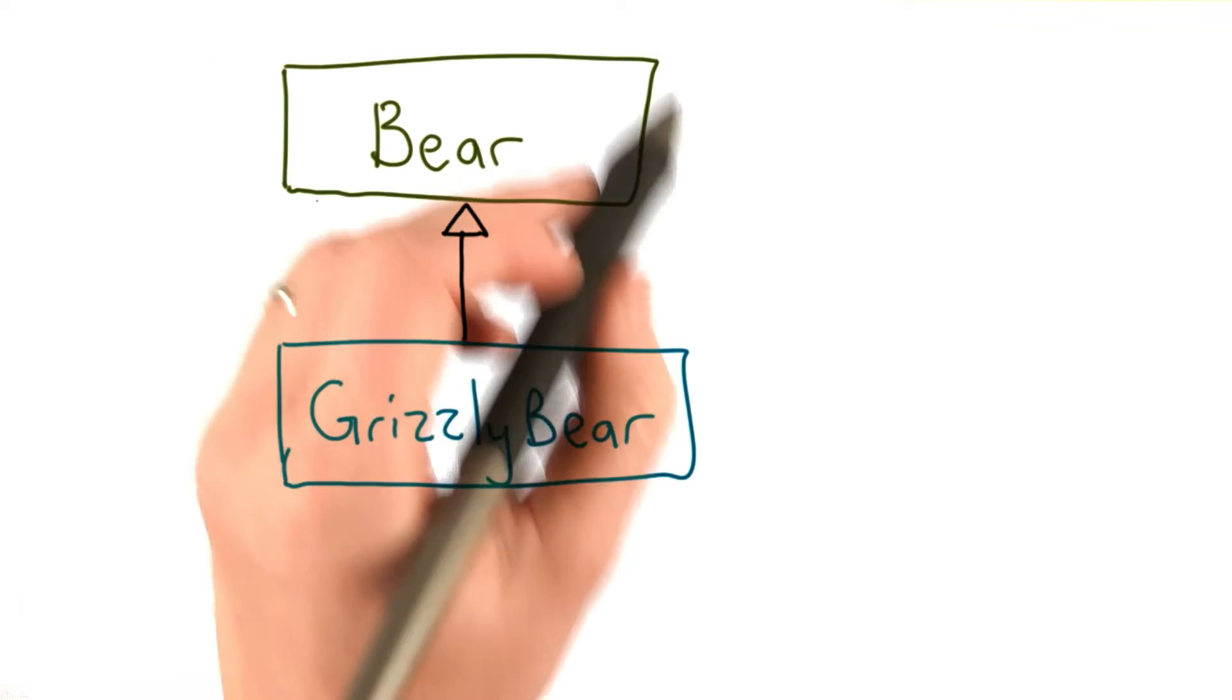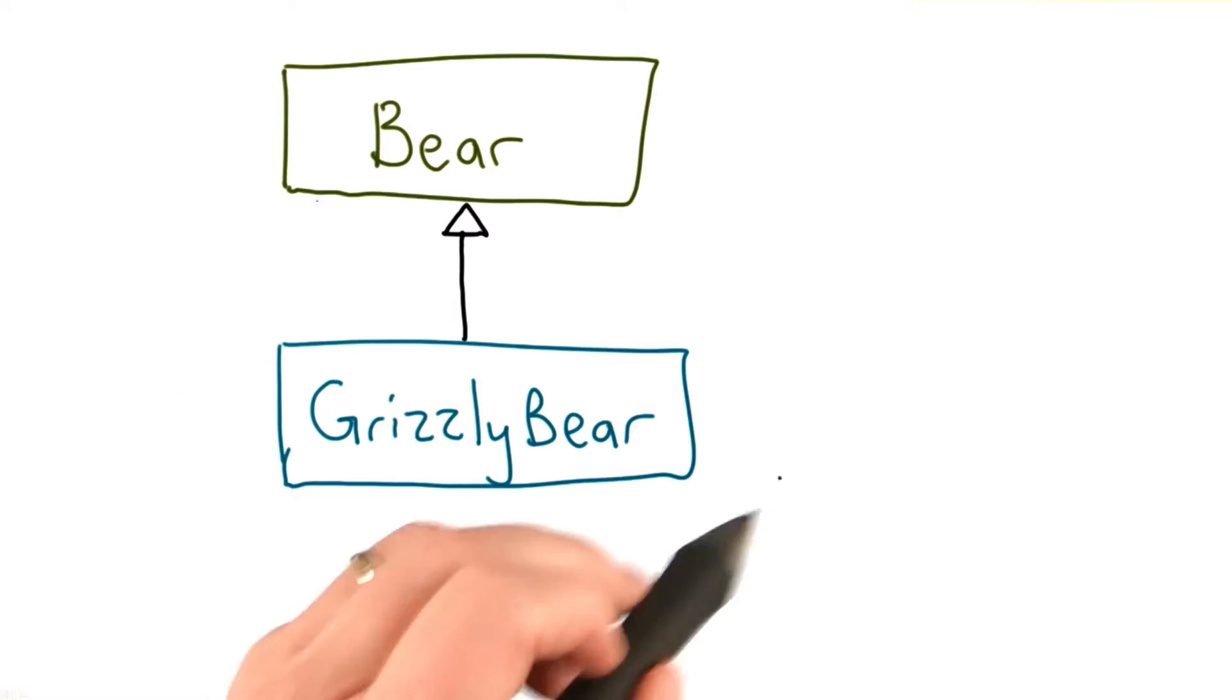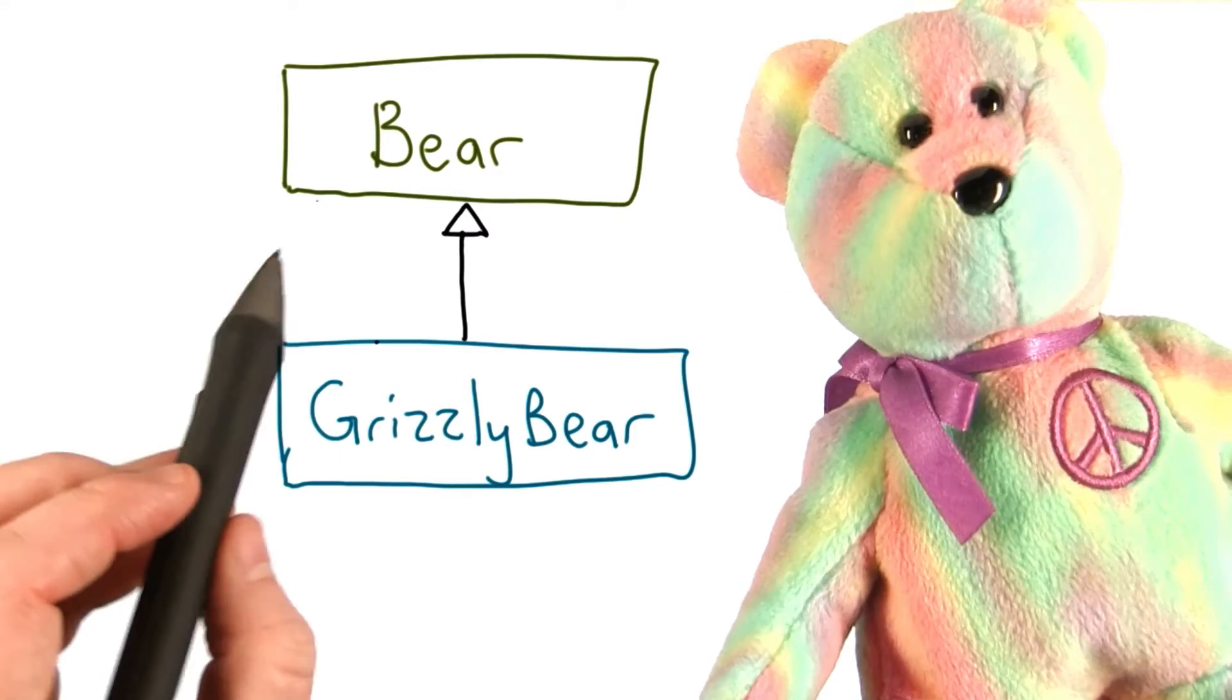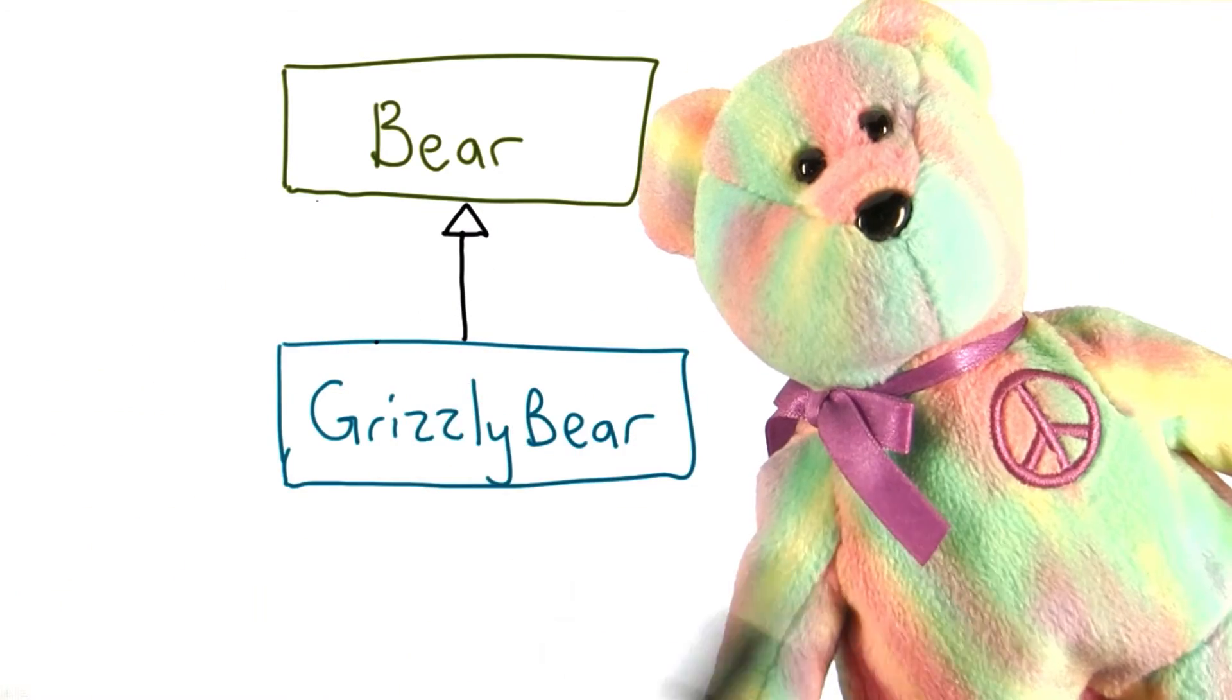Let's start by supposing we have a bear class which has a grizzly bear as a subtype. Here's the bear. Don't be put off by its color and peace symbol. It looks like a peaceful bear.